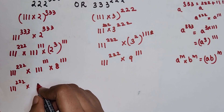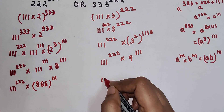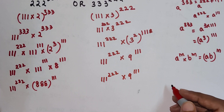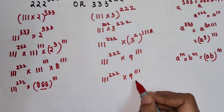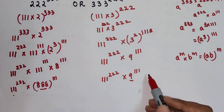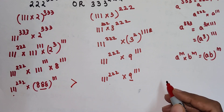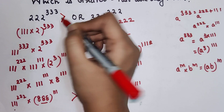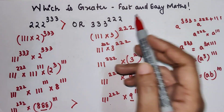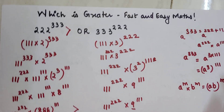This gives us 888 raised to 111, and the second expression is 111 raised to 222 into 9 raised to 111. Now, 111 raised to 222 is common to both sides, so we just need to compare 888 raised to 111 versus 9 raised to 111. Since they have the same power, we compare the bases, and 888 is clearly greater than 9. So 222 raised to 333 is greater than 333 raised to 222. That's it for today — see you in the next video!